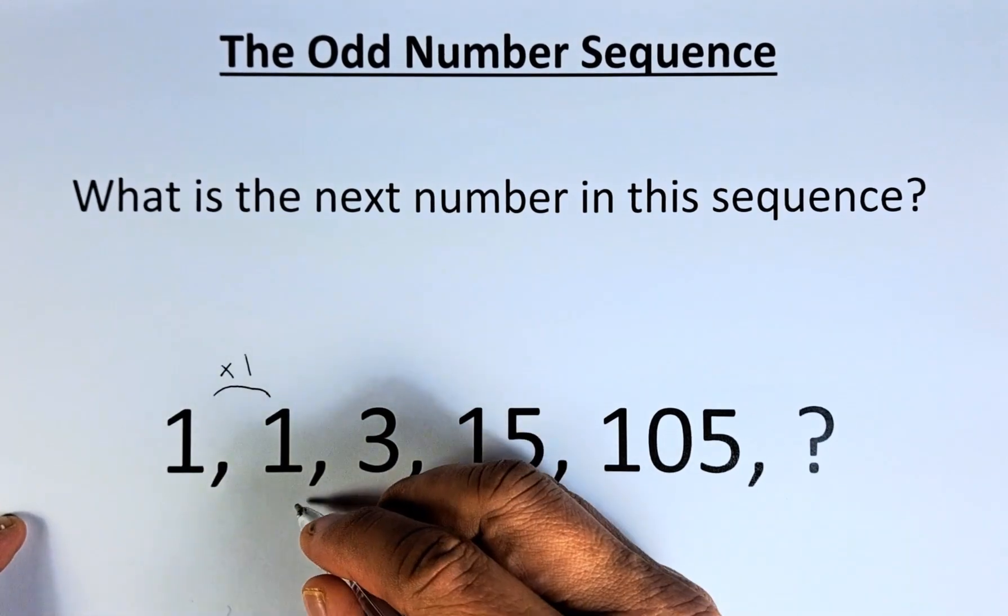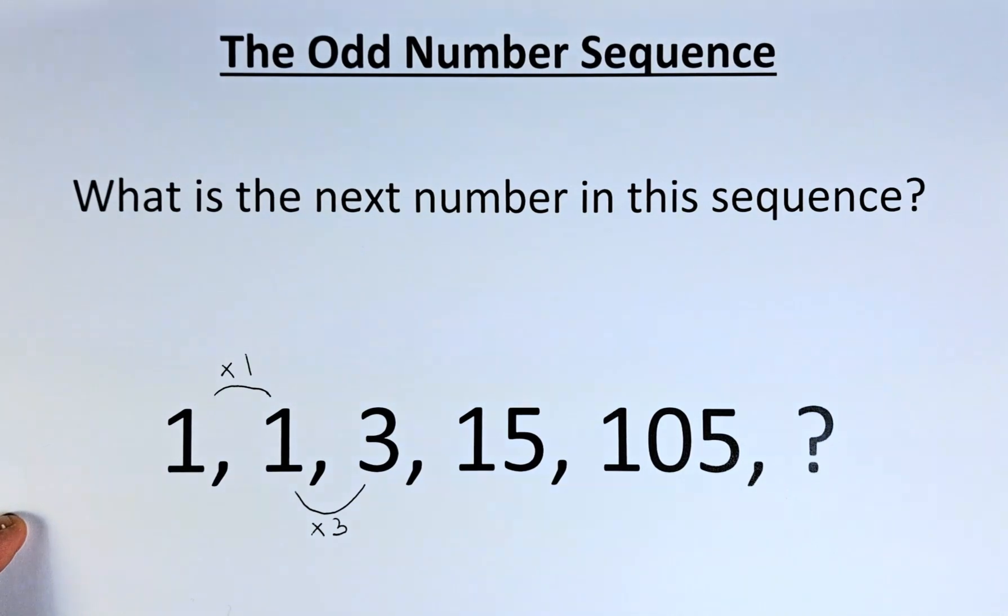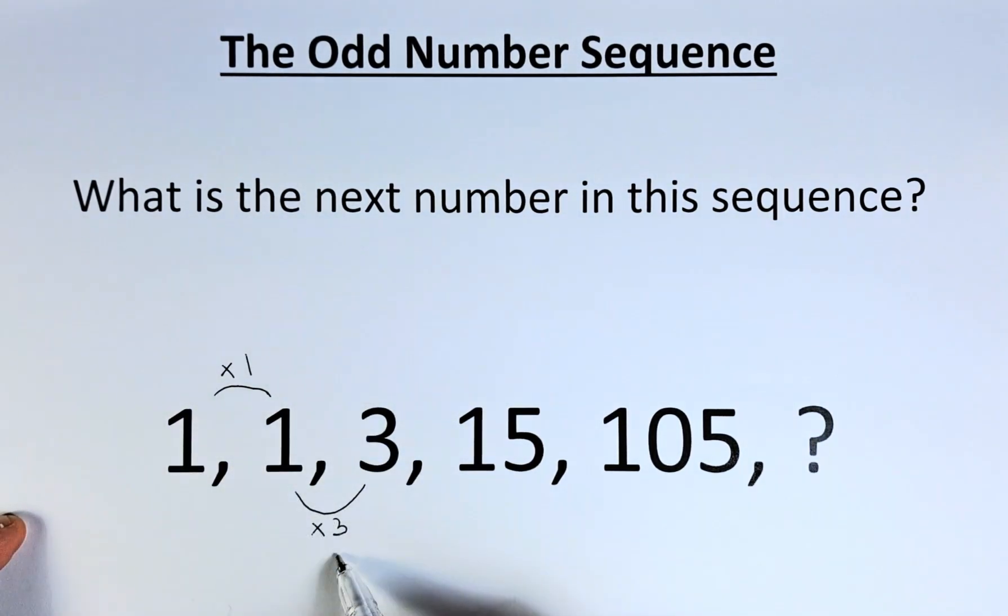The second number from 1 to 3, you are going to multiply by 3. It's an odd number, so we are going to multiply everything by the odd numbers. So multiply by 1, 1 multiplied by 3 will give you 3.